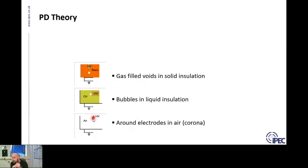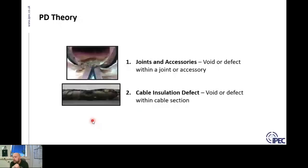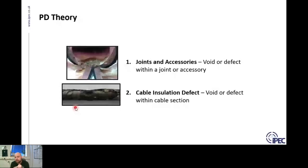In cables, the main places you'll find a defect are on the joints and accessories. You can get PD occurring in the pure cable insulation — it's much more common in older network types like oil and paper cables. In modern networks using XLPE or polymer-based cables, the joints and accessories — the man-made bits that an engineer terminates on site — are where defects are found, because modern manufacturing techniques mean pure cable quality is very high and cables go through stringent tests on production and commissioning.